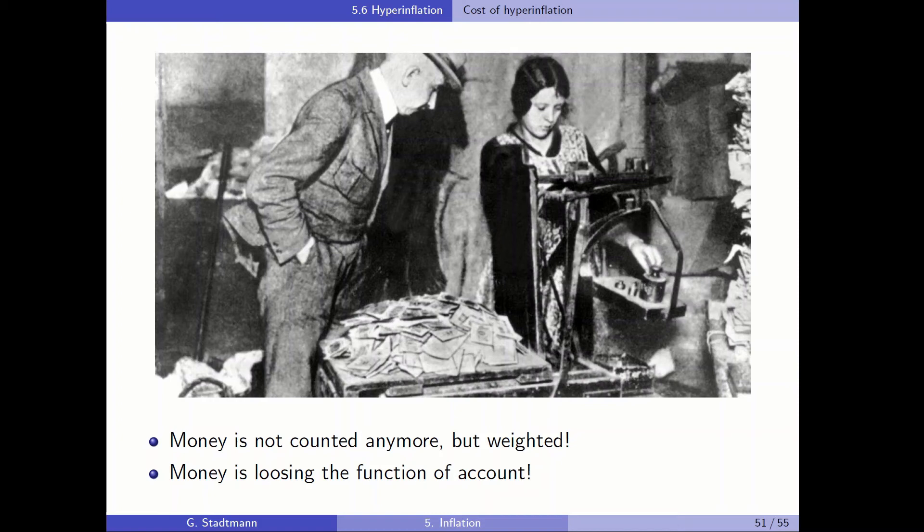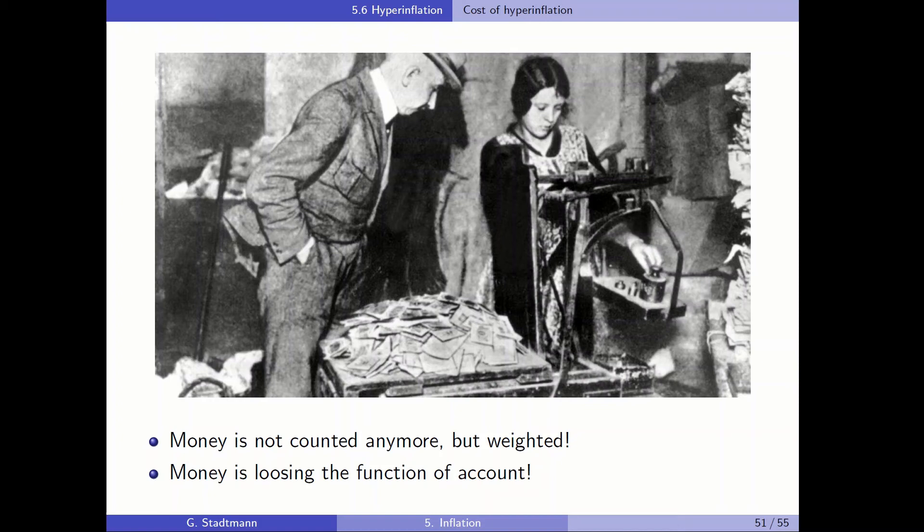So why is it the case that hyperinflation can occur? Like it all starts with the government, not the central bank. The government has three options to finance its spending: Taxes, borrowing via issuing bonds, or printing money. So also the German government had a problem. It was the case that Germany lost the first world war and it had to pay a fine to the French government. So what did the Germans do? They had a problem and they were just printing the money and afterwards they were giving this kind of money to the French government. Of course, it will be the case that in this situation inflation will pick up.